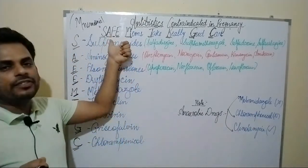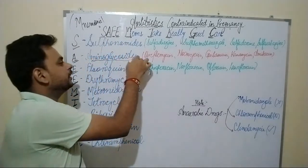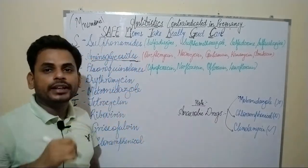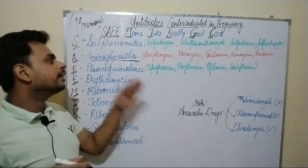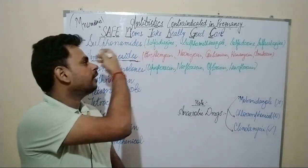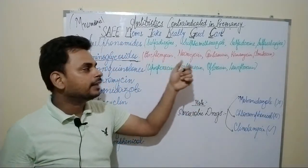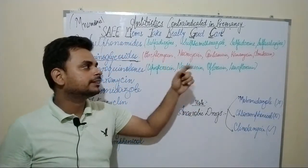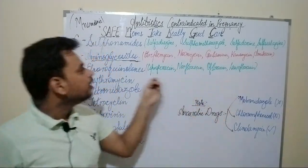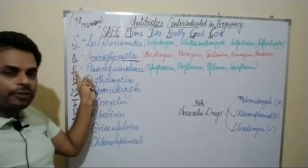Moving to the A of 'safe' — it refers to the aminoglycosides. Aminoglycosides are also contraindicated in pregnancy. Among them, the most commonly noted aminoglycosides are streptomycin, neomycin, gentamicin, kanamycin, and amikacin.